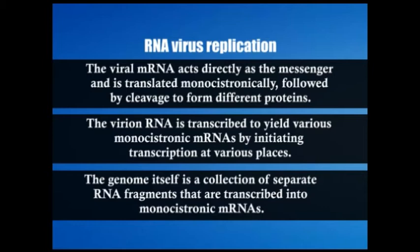In the third strategy, the genome itself is a collection of separate RNA fragments transcribed into monocistronic mRNAs. In all cases, replication involves building a template strand complementary to the viral strand, which then serves as the template for progeny viral strands. These steps are carried out by a collection of enzymes of both viral and cellular origin. In RNA replication, the newly made template strand remains associated with the viral strand, forming a double-stranded structure known as the replicative form, and synthesis of new strands occurs by conservative asymmetric synthesis.